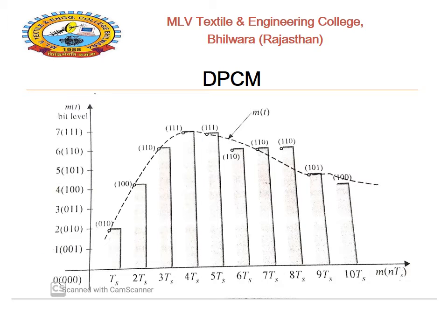In DPCM, the sample of a signal does not change rapidly — that is, its present sample to next sample does not change by a large amount. The adjacent samples of signal M carry the same information with little difference. When these samples are encoded, the resulting encoded signal will contain redundant information.